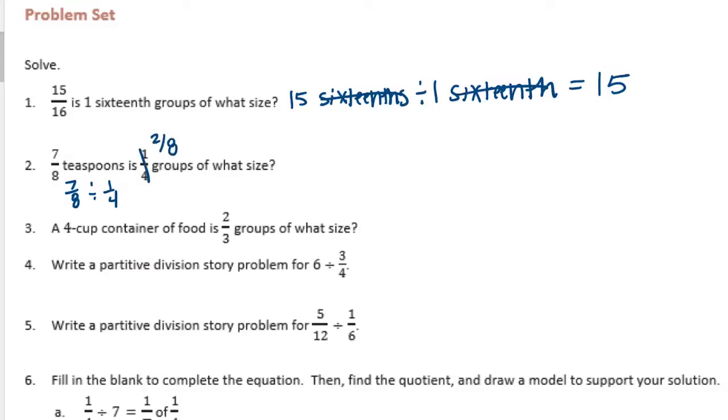So they have a common denominator. And now we have 7 eighths divided by 2 eighths, which turns out to just be 7 divided by 2 or 7 halves. And 7 halves is equal to 3 and a half. So each group would be 3 and a half.